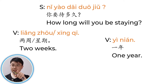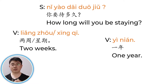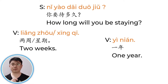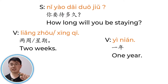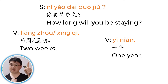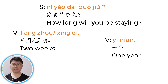你要待多久? 你要 means want to. 待 means to stay. 多久 means how long. How long will you be staying? Answer: 两周 or 两星期. 两 means two. 星期 and 周 both mean week, so 两周 means two weeks. Another answer: 一年. 一 means one — when followed by the second tone it becomes the fourth tone, 一年 — one year.